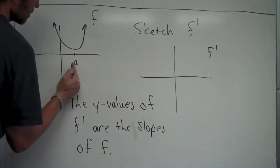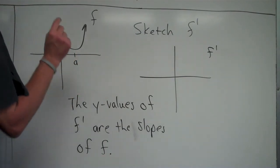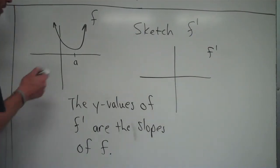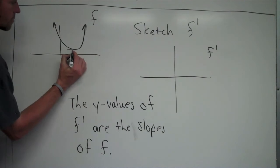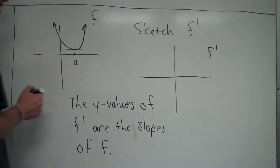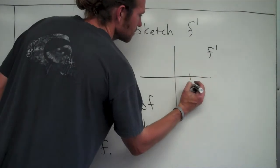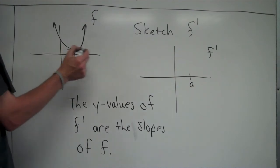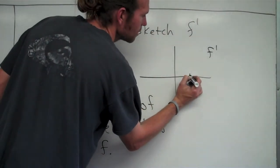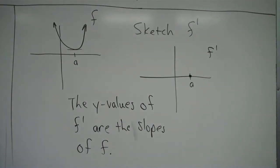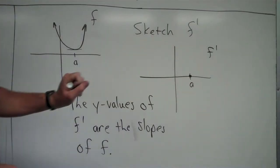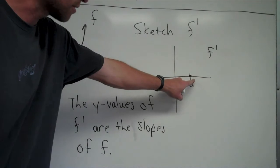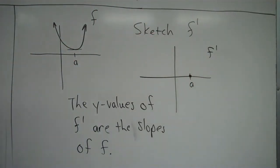I will always start with any place on the graph of f where the slope is zero. I notice right here that at x equals a, this graph has a slope of zero — it would have a horizontal tangent line. So at x equals a on my graph of f prime, since f has a slope of zero there, f prime is going to have a y-value of zero at x equals a. Because the y-values of f prime are the slopes of f.